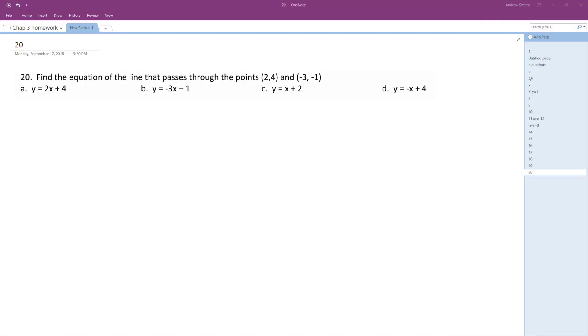Alright, so what we have here is the equation of a line that passes through the points 2, 4, and negative 3, negative 1. So first thing we're going to do is we will use the point slope form, but first we need to find the slope between these two points.